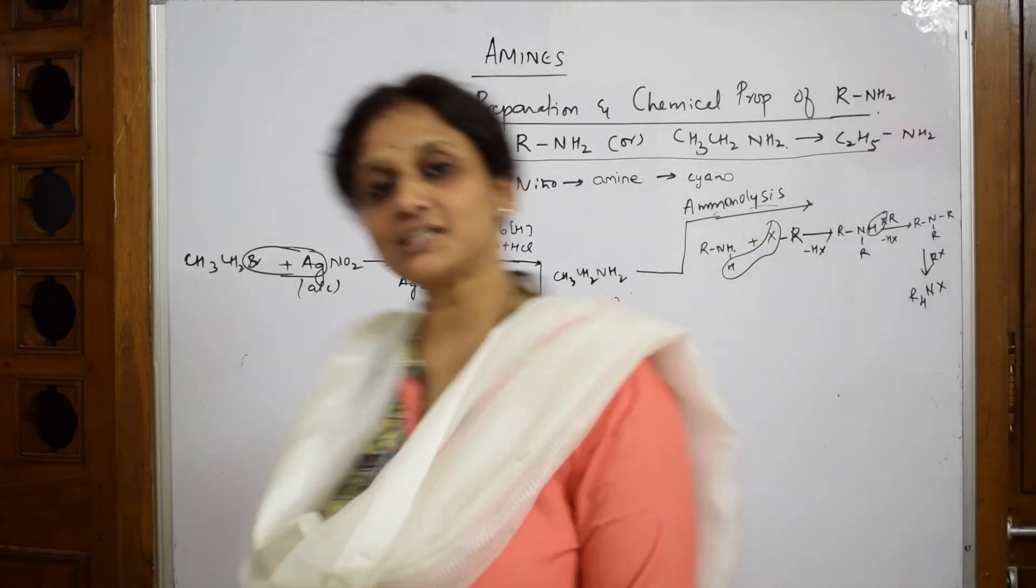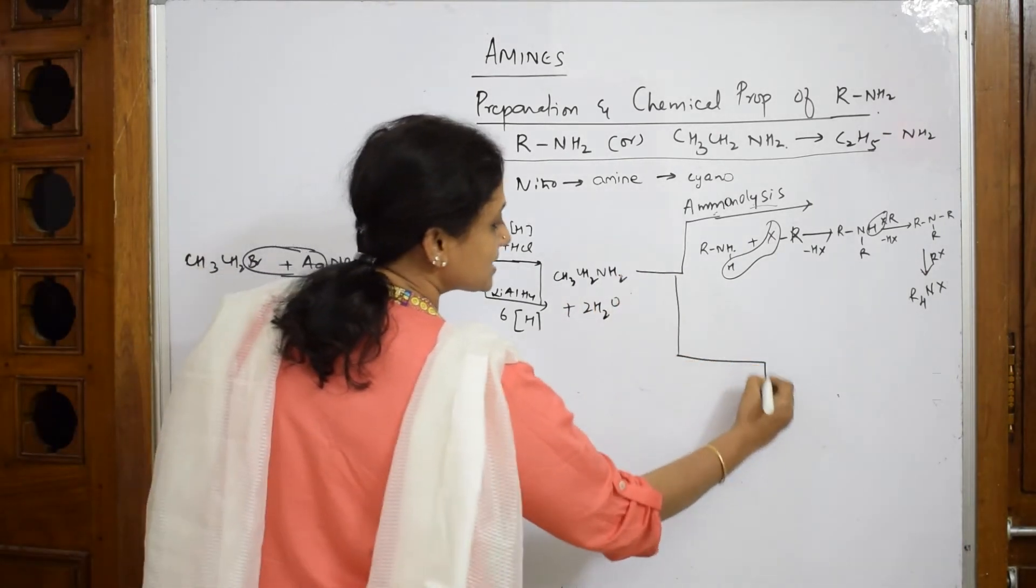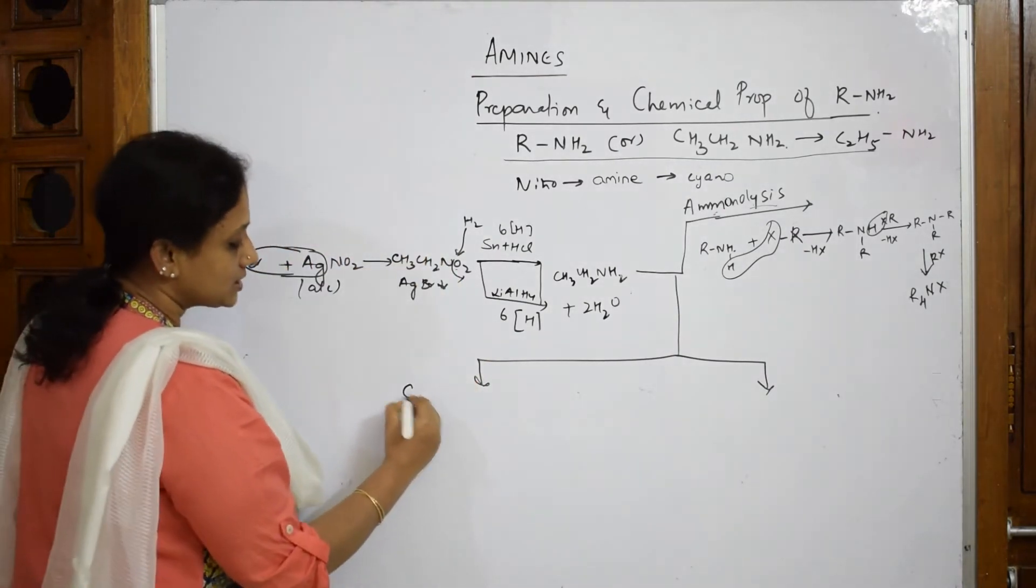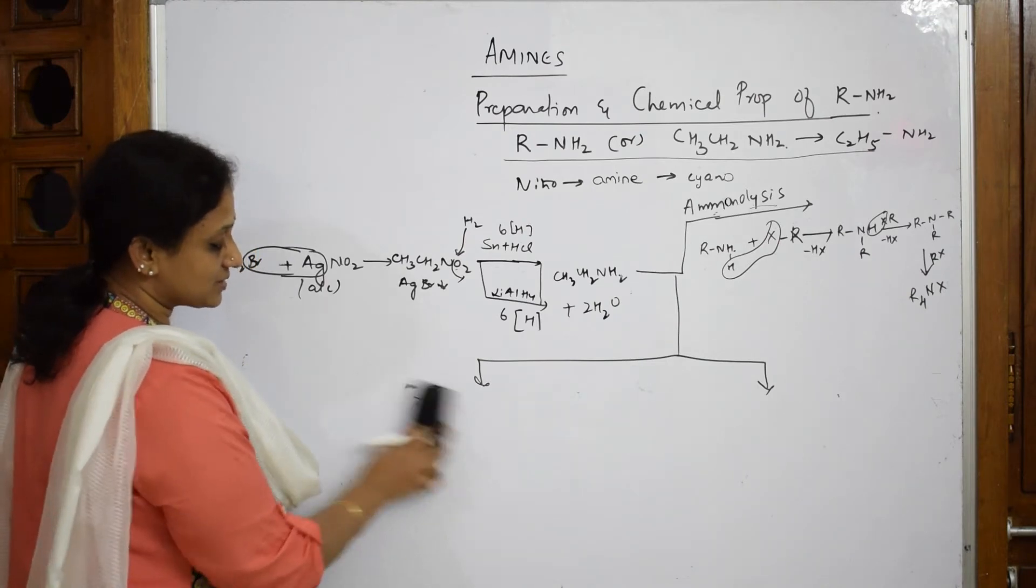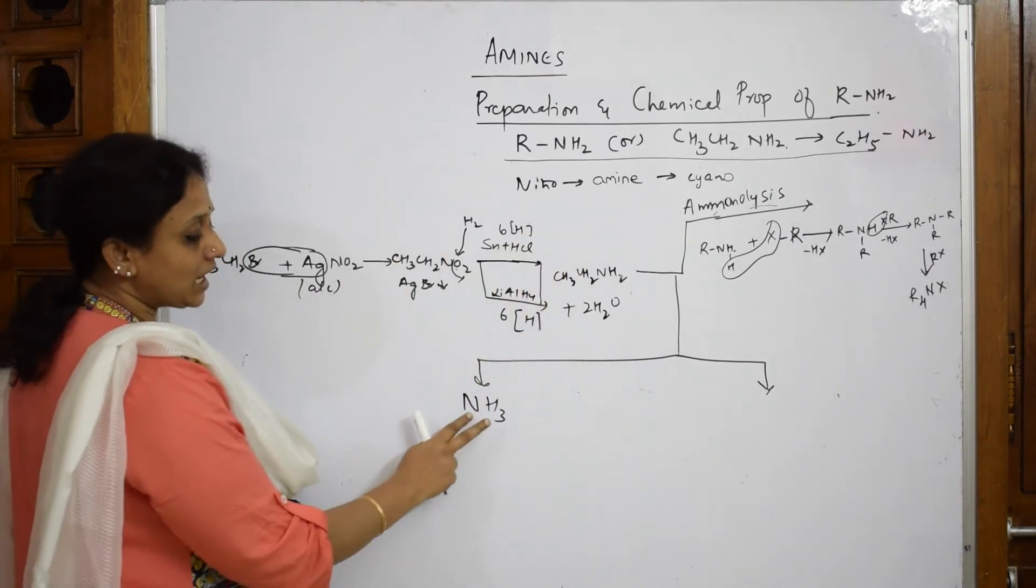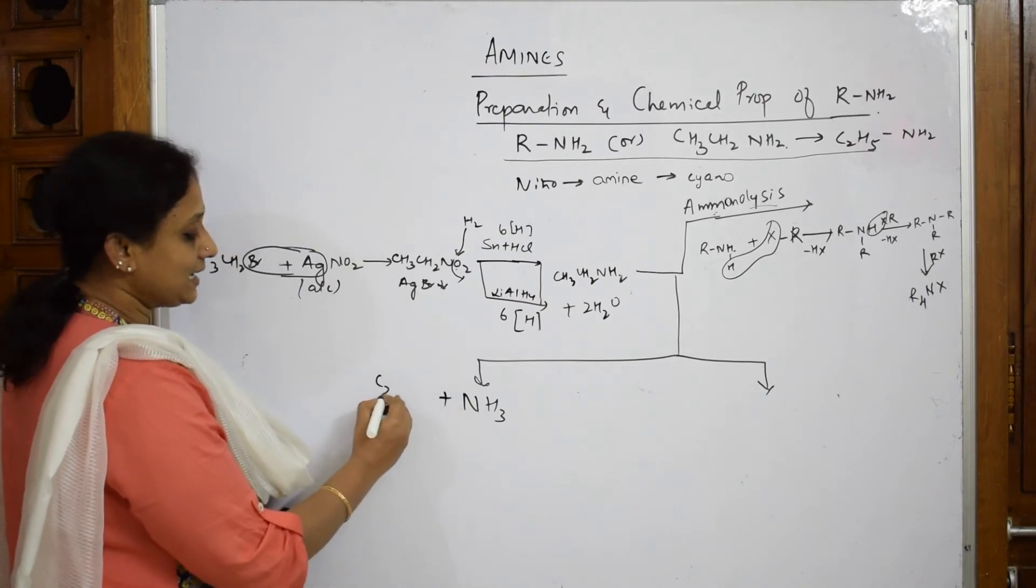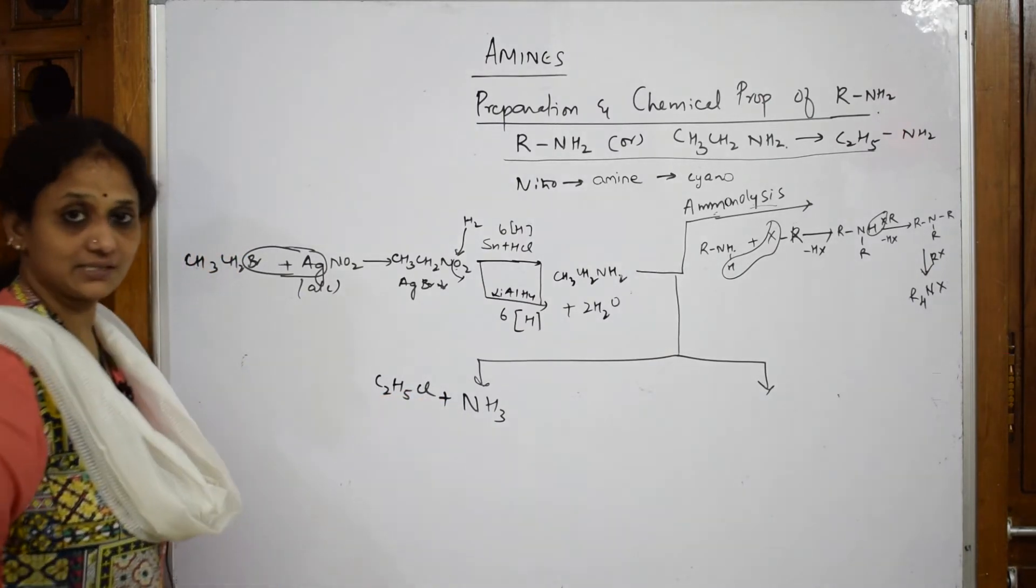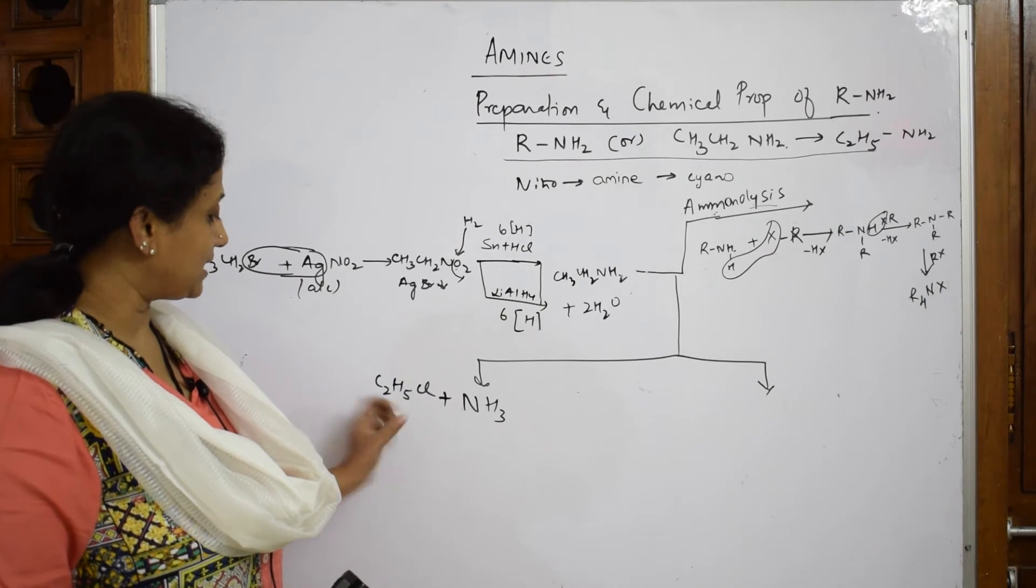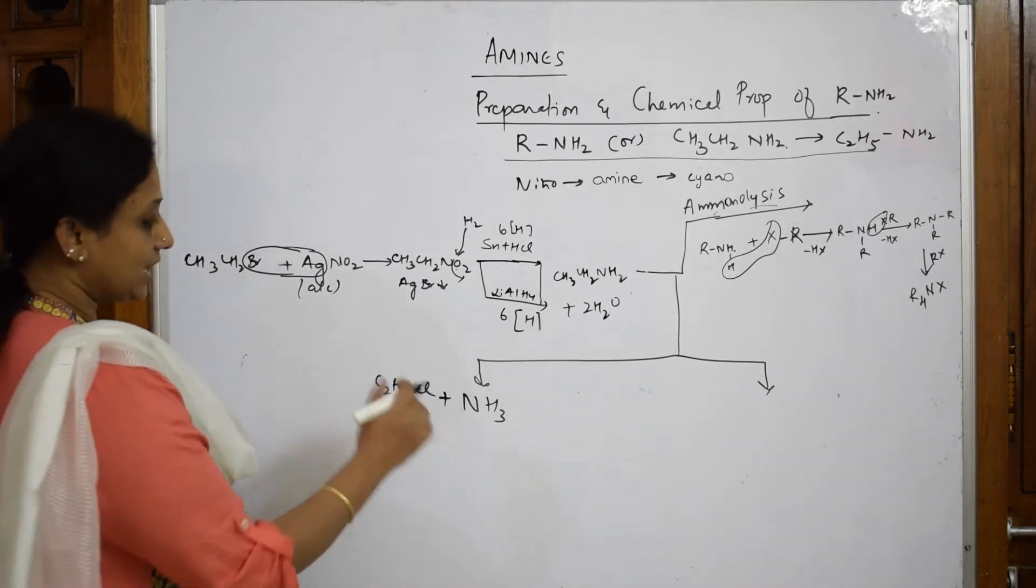Let us see examples. First, I'm going to take ammonia for aminolysis. The concept is the same, but here I'm adding ammonia to an alkyl halide. Aminolysis is the process of addition of ammonia to an alkyl halide.